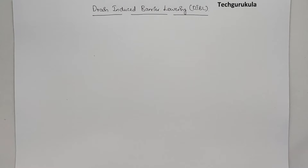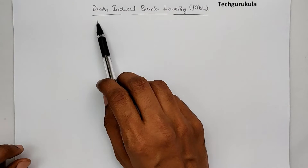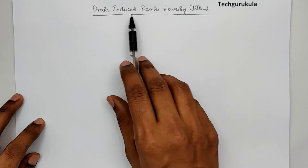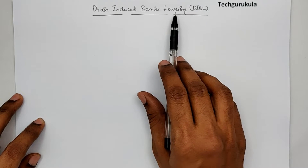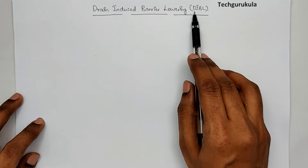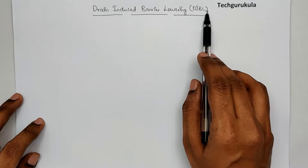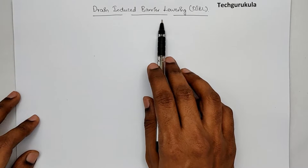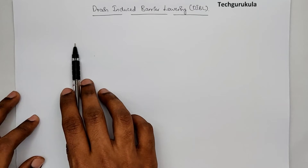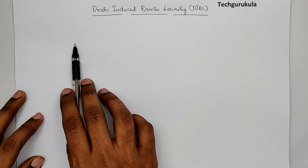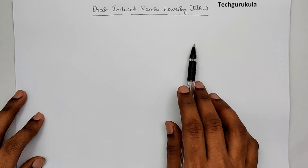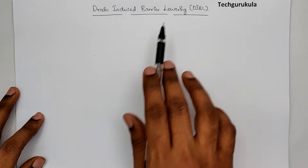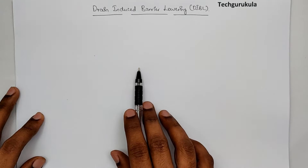In this section, I'm going to discuss one of the short channel effects called drain-induced barrier lowering. In short form, it is called DIBL. To understand DIBL, let me take a short channel MOSFET and compare that with a long channel MOSFET and show what happens because of this phenomenon.